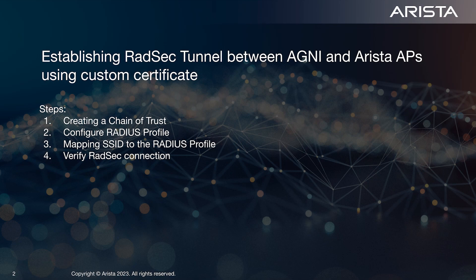To establish a RedSec tunnel between the AP and Agni, several steps need to be taken, which includes creating the chain of trust between Agni and AP, configuring the radius profile, and mapping the radius profile to a specific society.